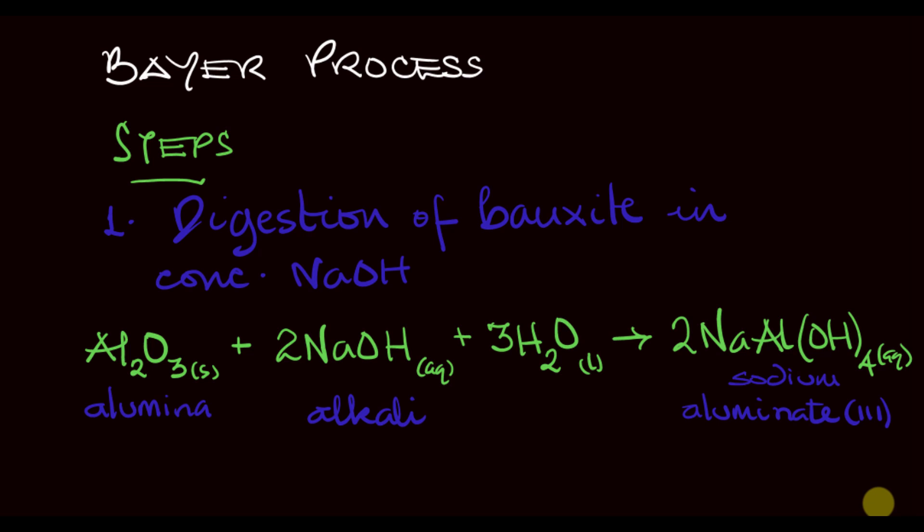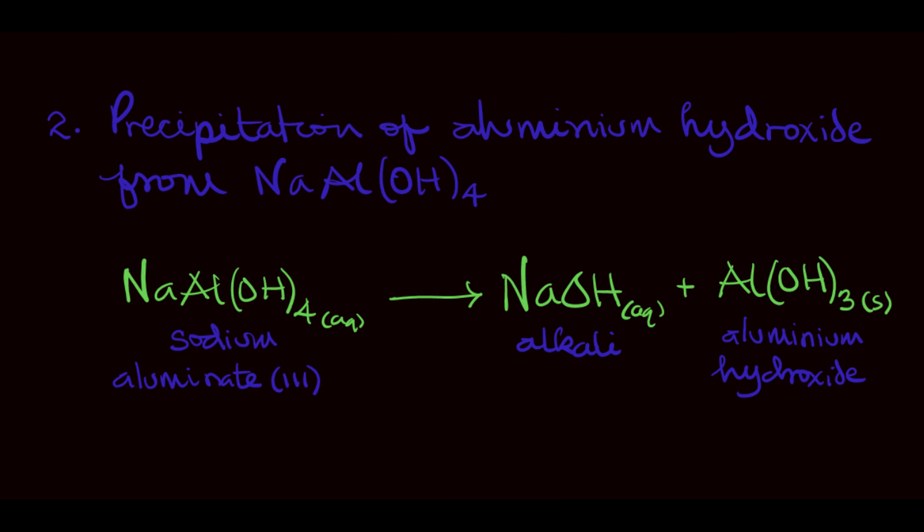After getting the sodium aluminate solution, we then carry out the precipitation of aluminum hydroxide from the sodium aluminate solution using what we call the common ion effect. This means that we are using a common ion of the salt in solution to reduce the solubility of that particular salt or ion in the solution. Aluminum ion is in the solution in this sodium aluminate, so we want to reduce its solubility. We want it to come out of solution, so we add pure crystals of aluminum hydroxide to it. That's the common ion effect.